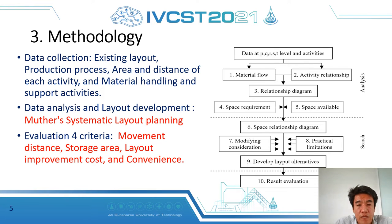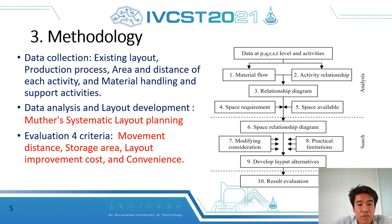P is the type of product. Q is the quantity. R is the route. S is the support activity. And T is cycle time. Next, we analyze the process flow chart and the relationship level to create an activity relationship diagram, using data to indicate the importance by the letters A, E, I, O, U, and X.